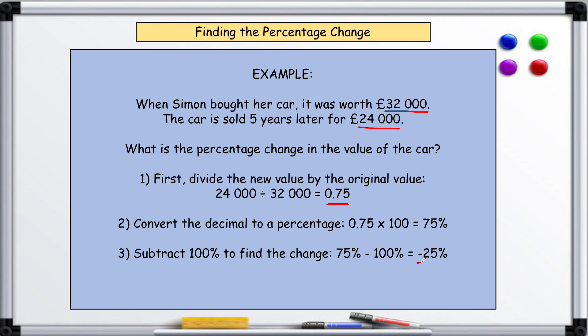And here you can see, taking 100 off of 75 gives you negative 25. So the decrease in value of his car has been 25% decrease.